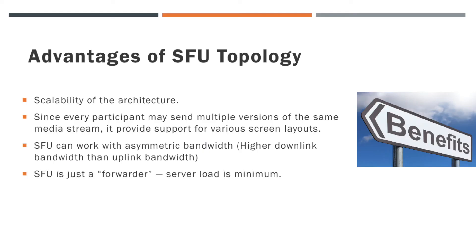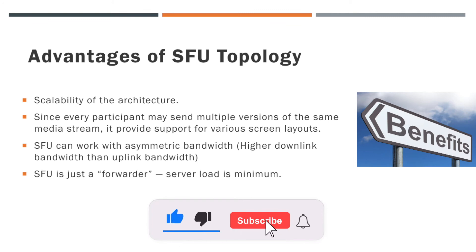The main advantage of the SFU architecture is scalability — it is capable of handling more participants while keeping server load to a minimum. Since every participant may send multiple versions of the same media stream, it provides support for various screen layouts. You can provide different quality streams to different participants as well. Another advantage is the ability to work with asymmetric bandwidth — if you have higher downlink bandwidth than uplink bandwidth, then SFU is perfect for that case.